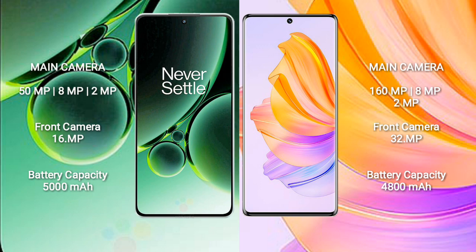OnePlus Nord 3 has a rear triple camera setup of 50MP plus 8MP plus 2MP, and a 16MP front camera. Honor 80 has a rear triple camera setup of 160MP plus 8MP plus 2MP, and a 32MP front camera.